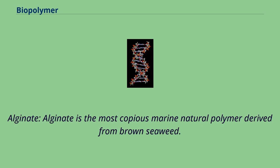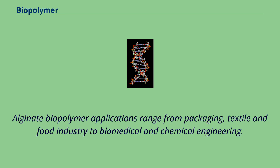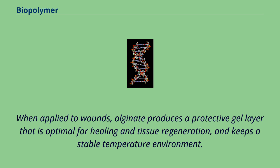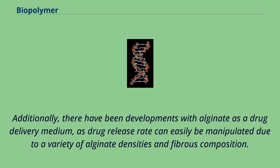Alginate is the most copious marine natural polymer, derived from brown seaweed. Alginate biopolymer applications range from packaging, textile, and food industry to biomedical and chemical engineering. The first ever application of alginate was in the form of wound dressing, where its gel-like and absorbent properties were discovered. When applied to wounds, alginate produces a protective gel layer that is optimal for healing and tissue regeneration and keeps a stable temperature environment. Additionally, there have been developments with alginate as a drug delivery medium, as drug release rate can easily be manipulated due to a variety of alginate densities and fibrous composition.